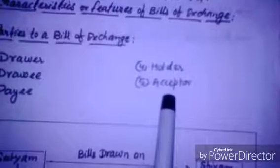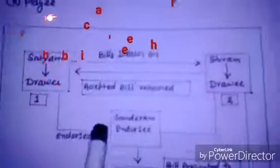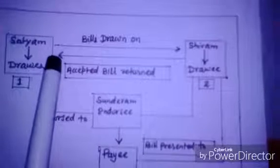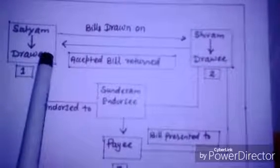Let's understand with a diagram how the bill of exchange works. Suppose on September 14, 2014, Satyam sells goods worth rupees 5,000 to Siam on credit. Satyam draws a bill on Siam for three months. The bill is accepted by Siam and returned to Satyam. Hence, Satyam is the drawer and Siam is the drawee and also the acceptor. If Satyam retains the bill till maturity, he will also become the payee.